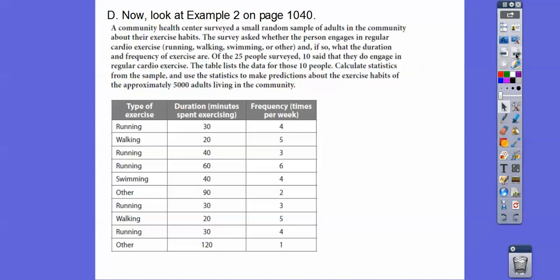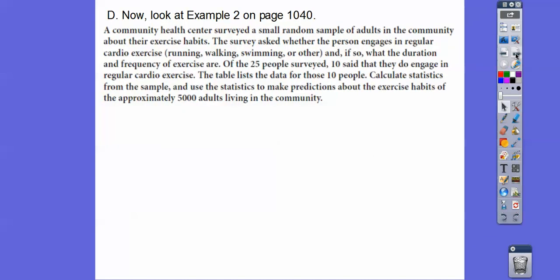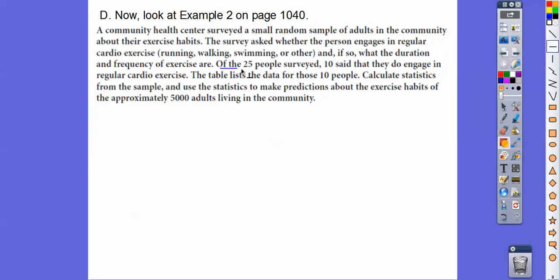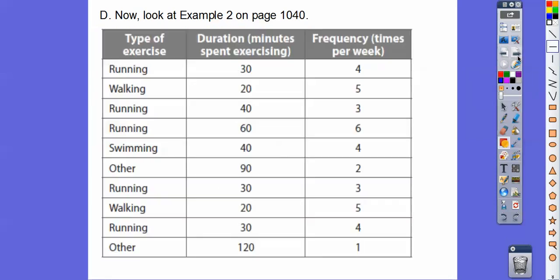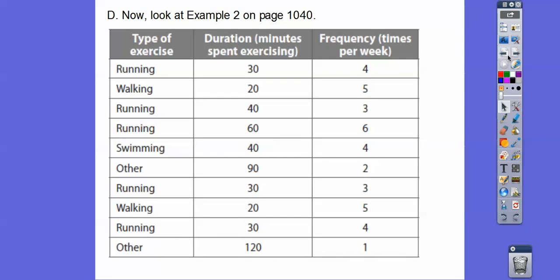So here's an example on example two on page 1040. So let's just read that one at a time. So a community health center surveyed a small random sample of adults in the community about their exercise habits. The survey asked whether the person engaged in regular cardio exercise, running, walking, swimming, or other. And if so, what the duration and the frequency of the exercise was. And so of the 25 people, so this is going to be important right here. So of the 25 people surveyed, 10 said that they do engage in a regular cardio exercise. So the table lists the data for these 10 people.